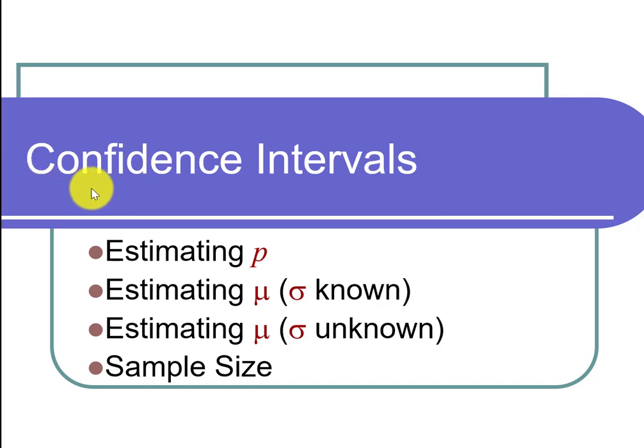This video is all about confidence intervals. We'll start by supposing we conducted a yes-no question survey and got a sample proportion. How good an estimate is that sample proportion for the population proportion? In other words, if I know the sample proportion, how far low and how far high do I go so I can say I'm confident that the population proportion is within this interval.